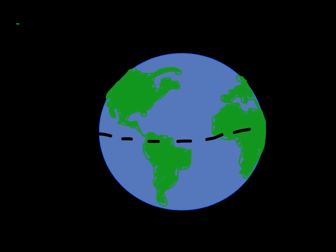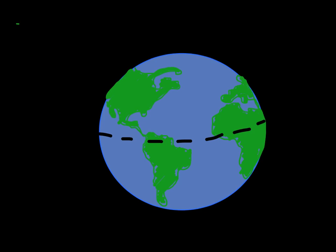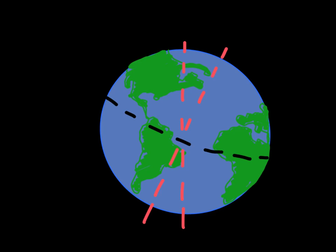The first thing we're going to talk about is moon phases. Here's the Earth. The Earth has an equator. The Earth also rotates — that means spin. It spins one revolution about every 24 hours. We call that a day. The Earth rotates around something called its axis, which is like a line that goes through the center. The Earth's axis is tilted at about 23 and a half degrees away from straight up and down.